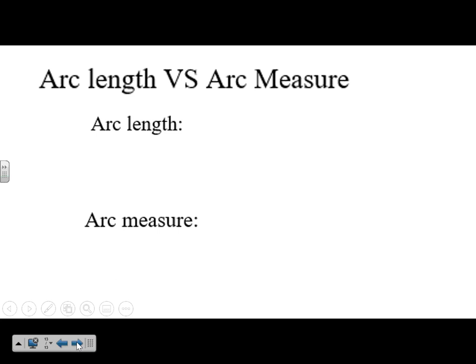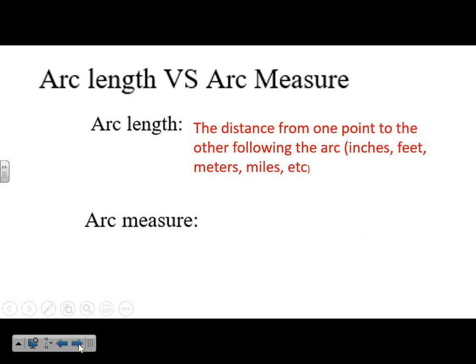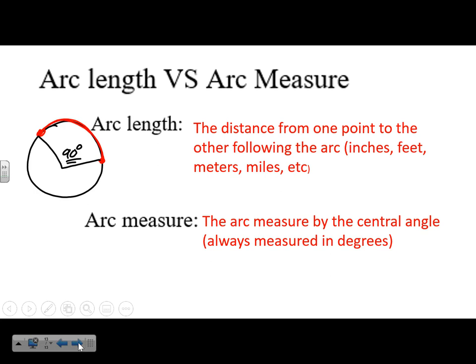The difference between arc length and arc measure: Arc length is the distance along the arc from one point to another, measured in inches, feet, meters, miles, etc. Arc measure is the degree measurement of the central angle — it's always in degrees. Arc length = physical distance; arc measure = degrees. Remember: length is about inches and feet; measure is about degrees.